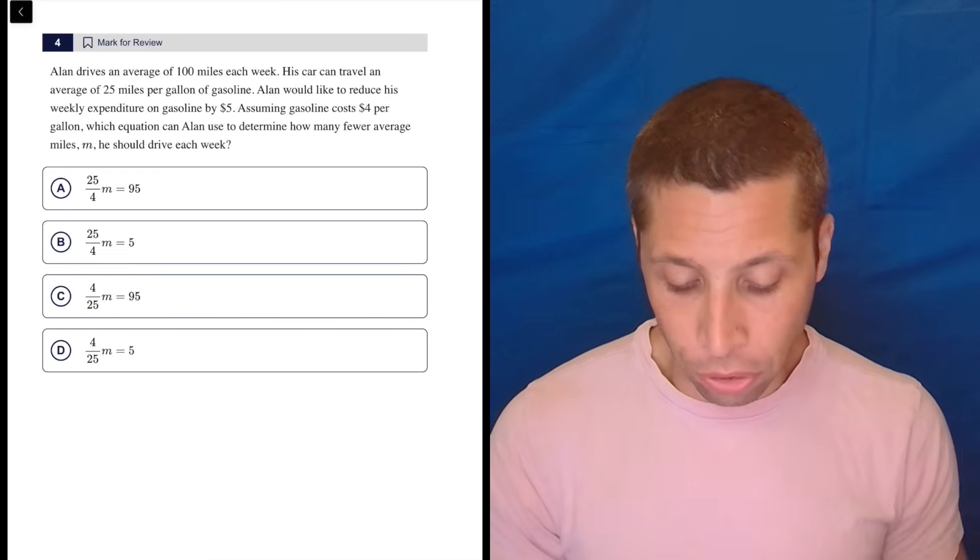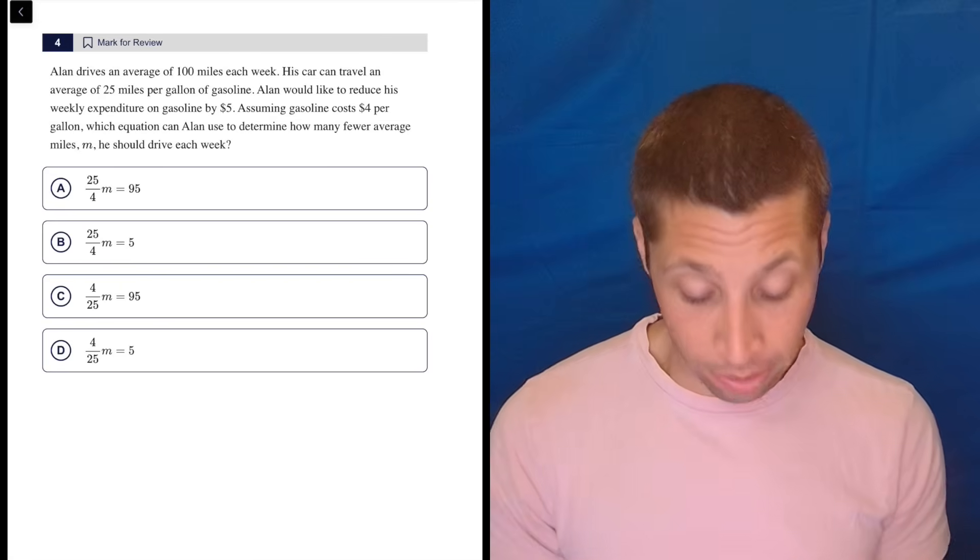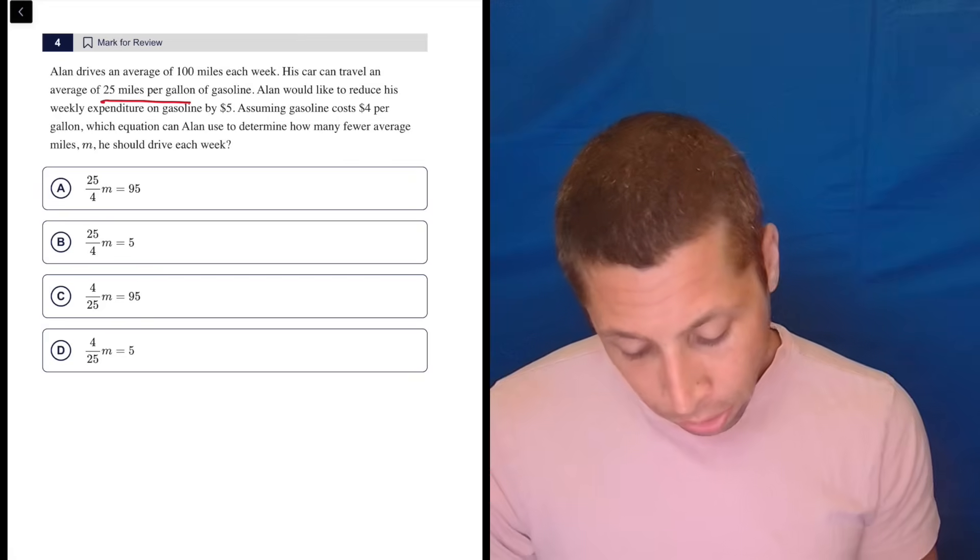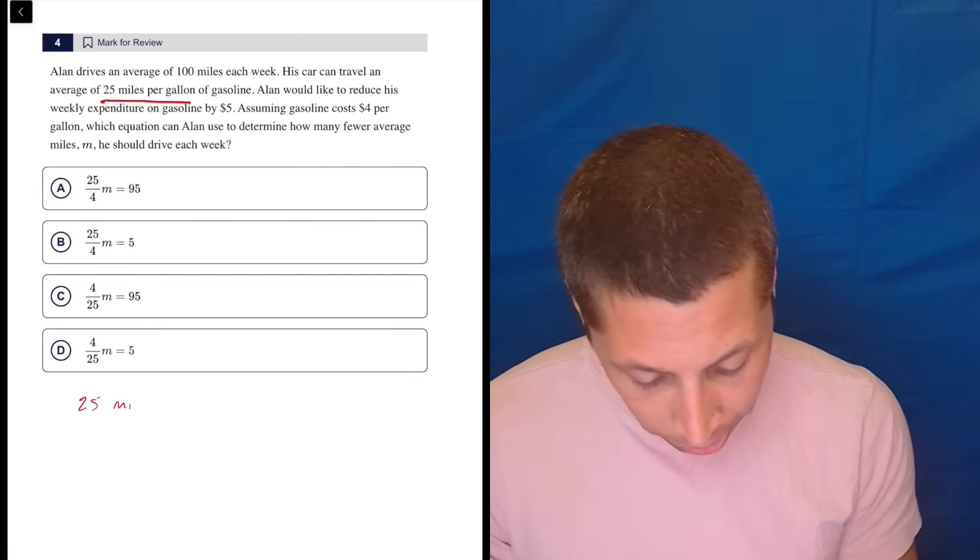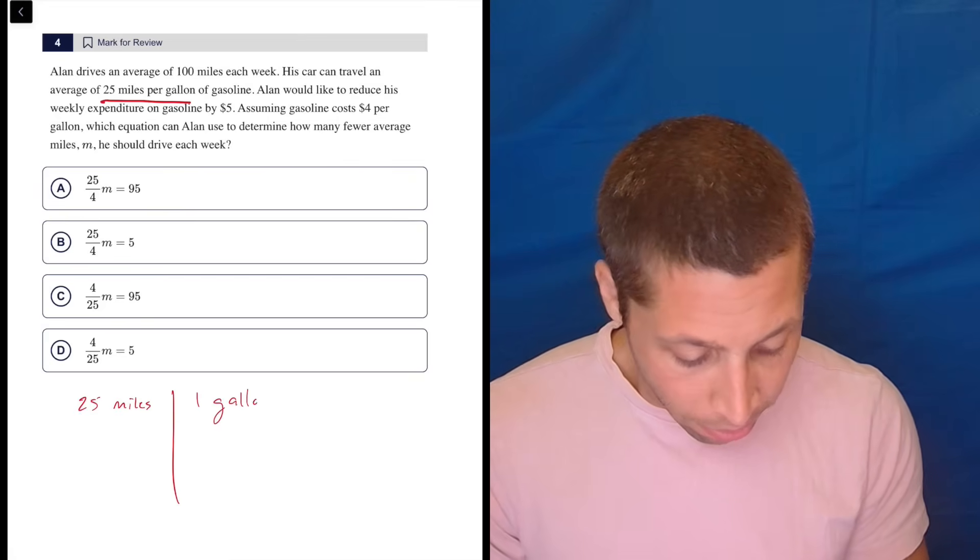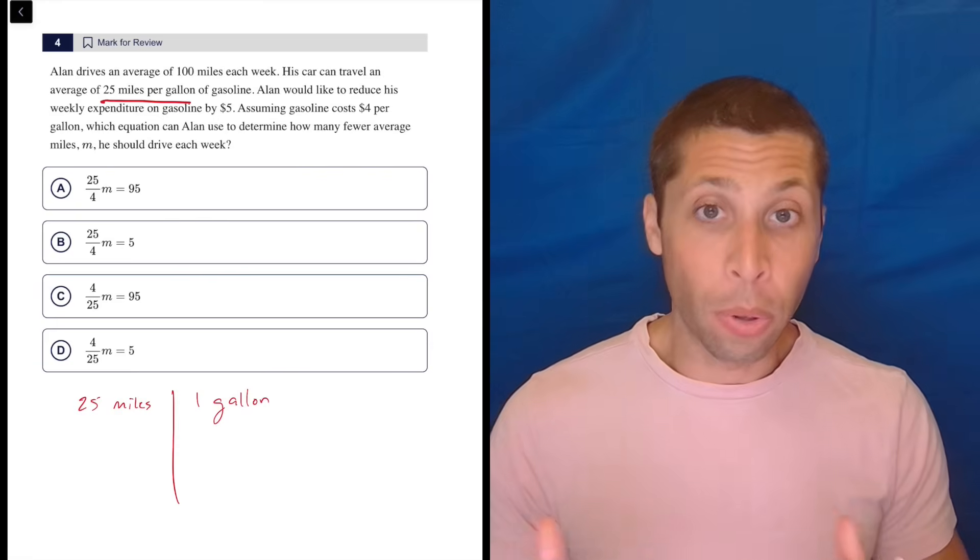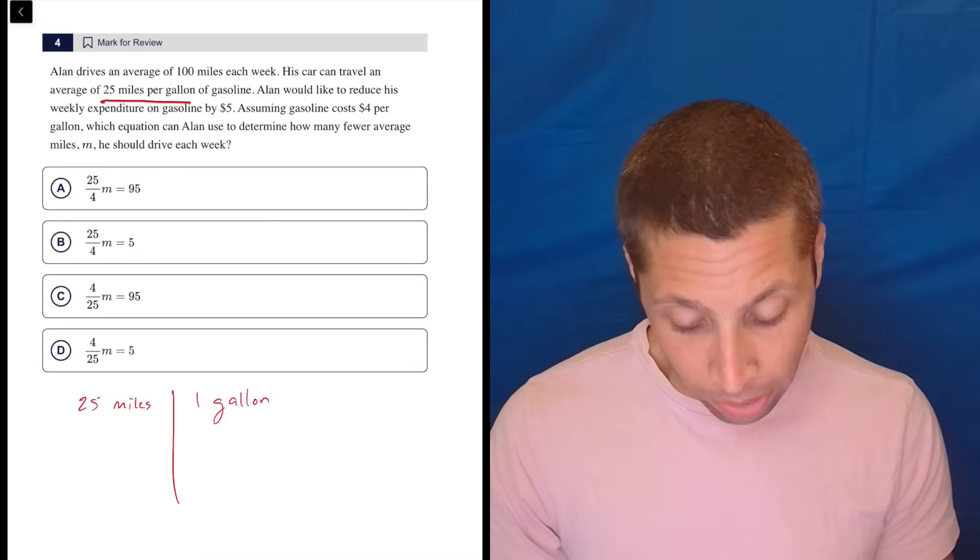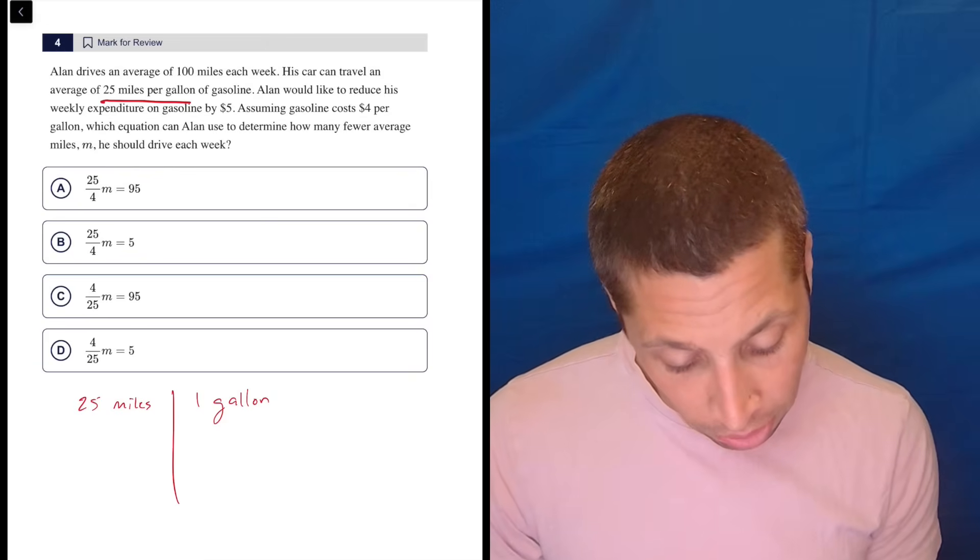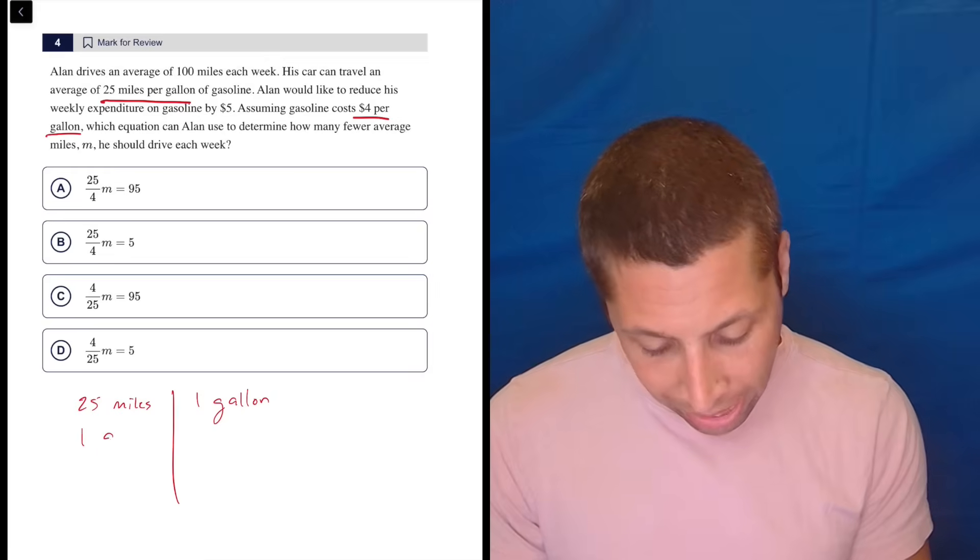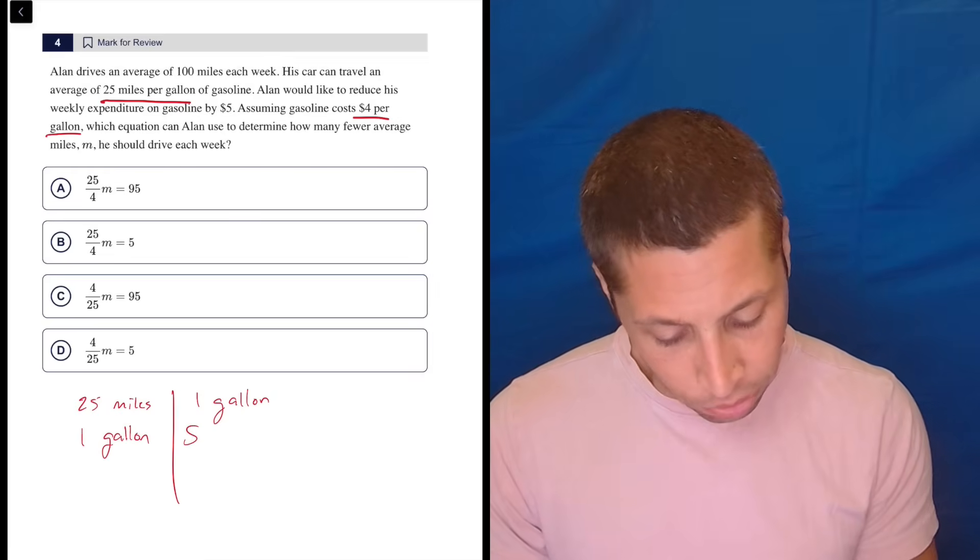I do the table method. So I focus first on whatever rate that I see in the question. The most obvious one to me is 25 miles per gallon. So okay, 25 miles, and I'm going to draw my table per one gallon, right? So now I need to eliminate a unit. So I want either miles or gallons, and I want to put it on the other side. So what do I see? Well, I see here that gasoline costs $4 per gallon. So let's throw that in. So one gallon costs $4.